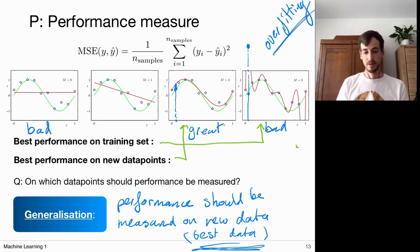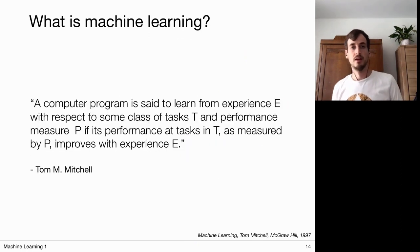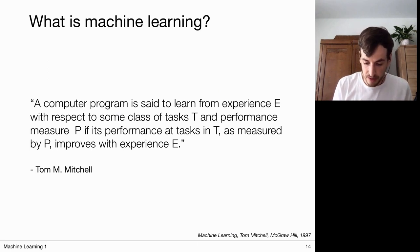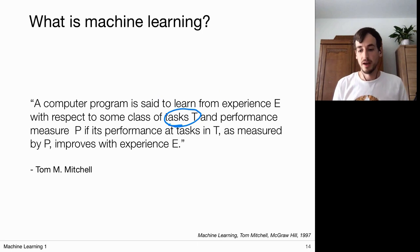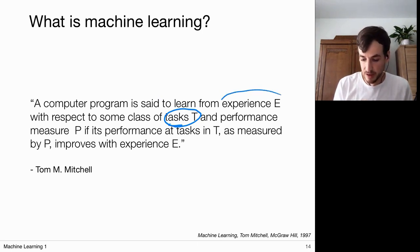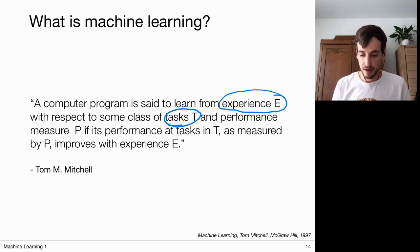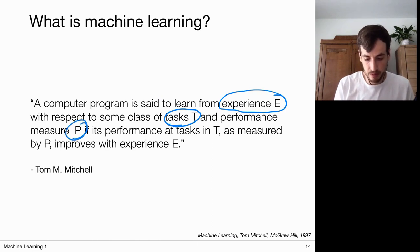So what we did in this short lecture is go over a definition of machine learning, breaking it down into three components: the task T, which is what we design the algorithm to do; experience E, which we use to improve performance; and performance measure P, which quantifies how well it's doing.